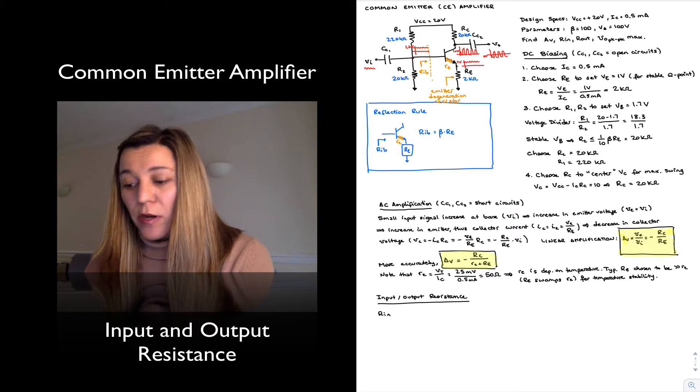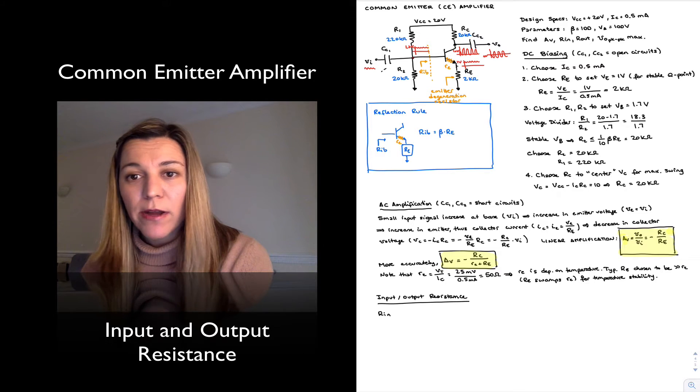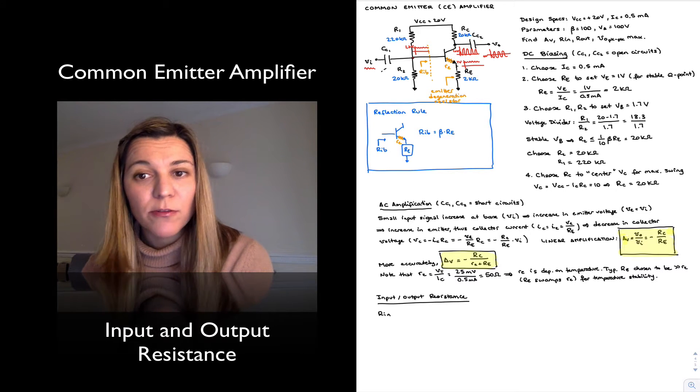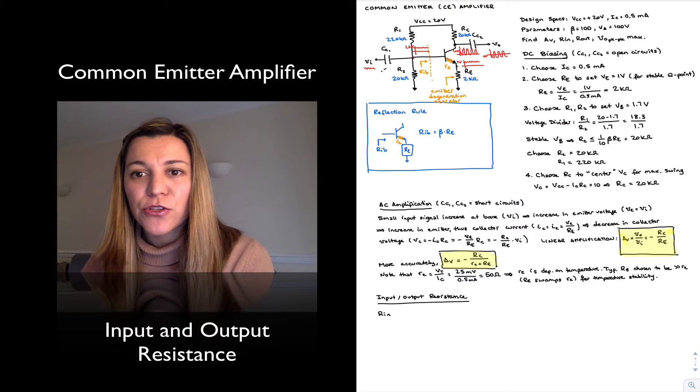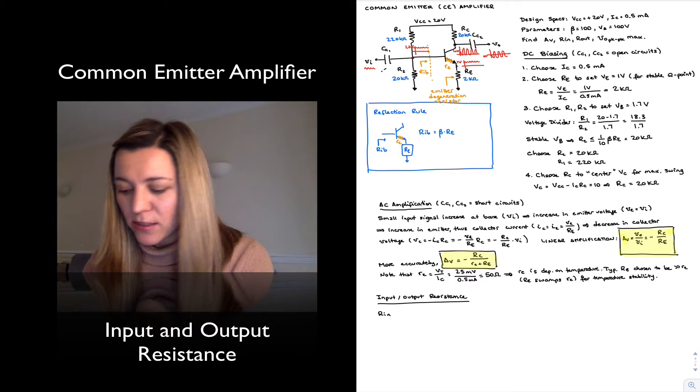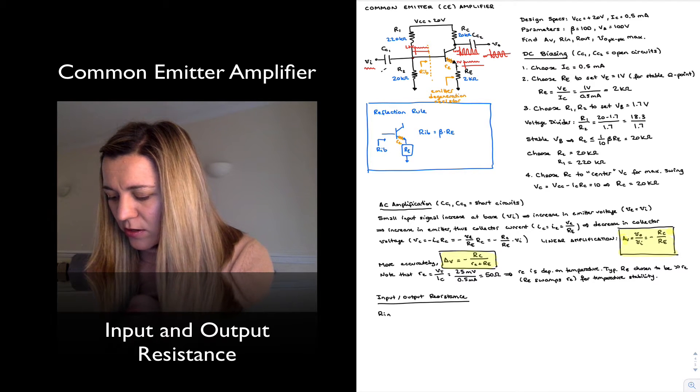When I'm calculating my input resistance, what I'm looking at when I see the circuit is I see CC1, I'm going to see it as a short for my AC equivalent circuit, and then I see R1 connected to an AC ground because it's connected to VCC. So what I see when I look at Rin there is—I can write it maybe here.